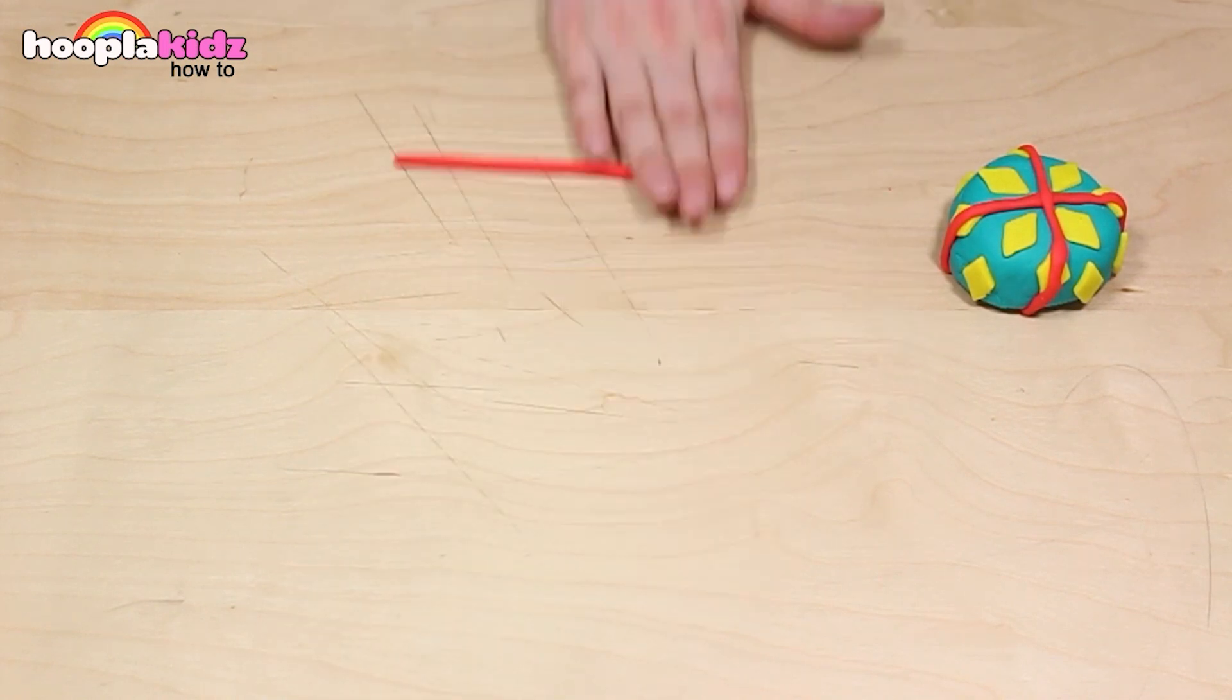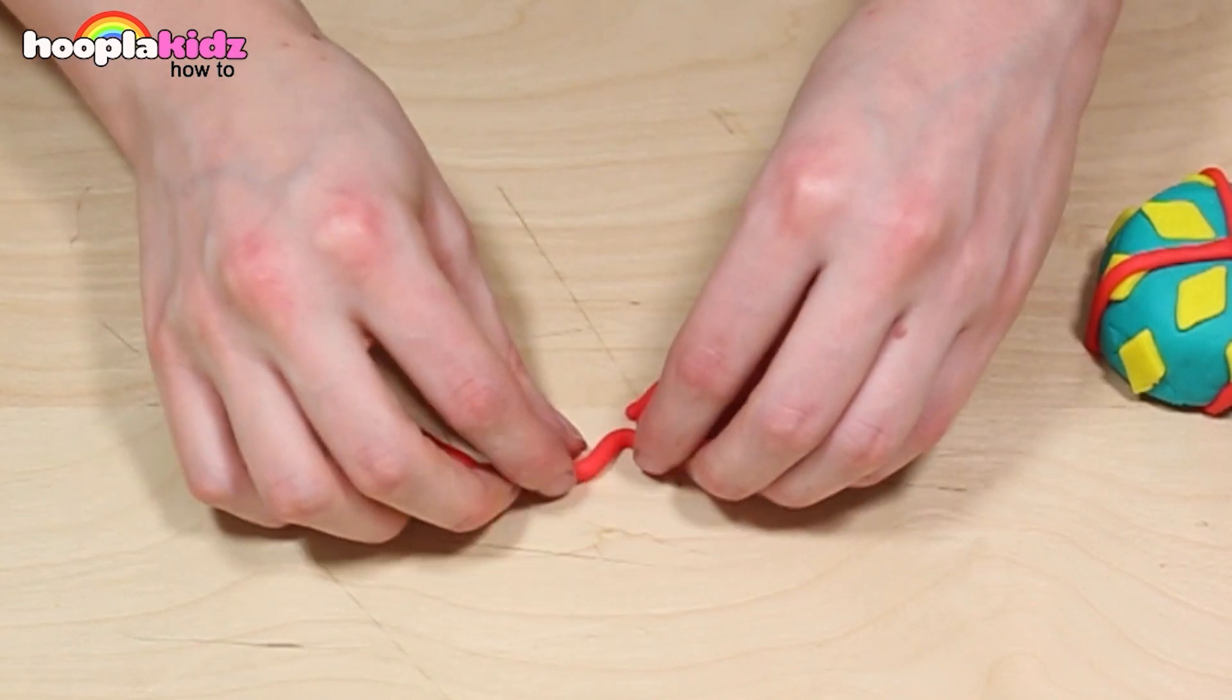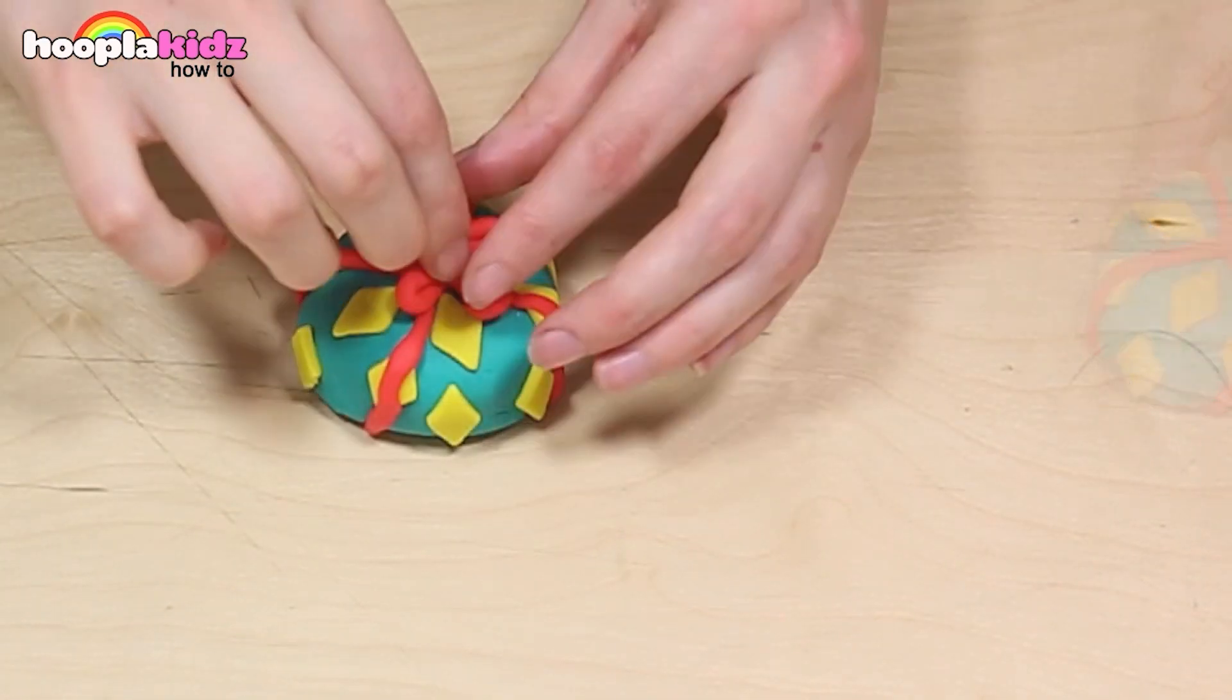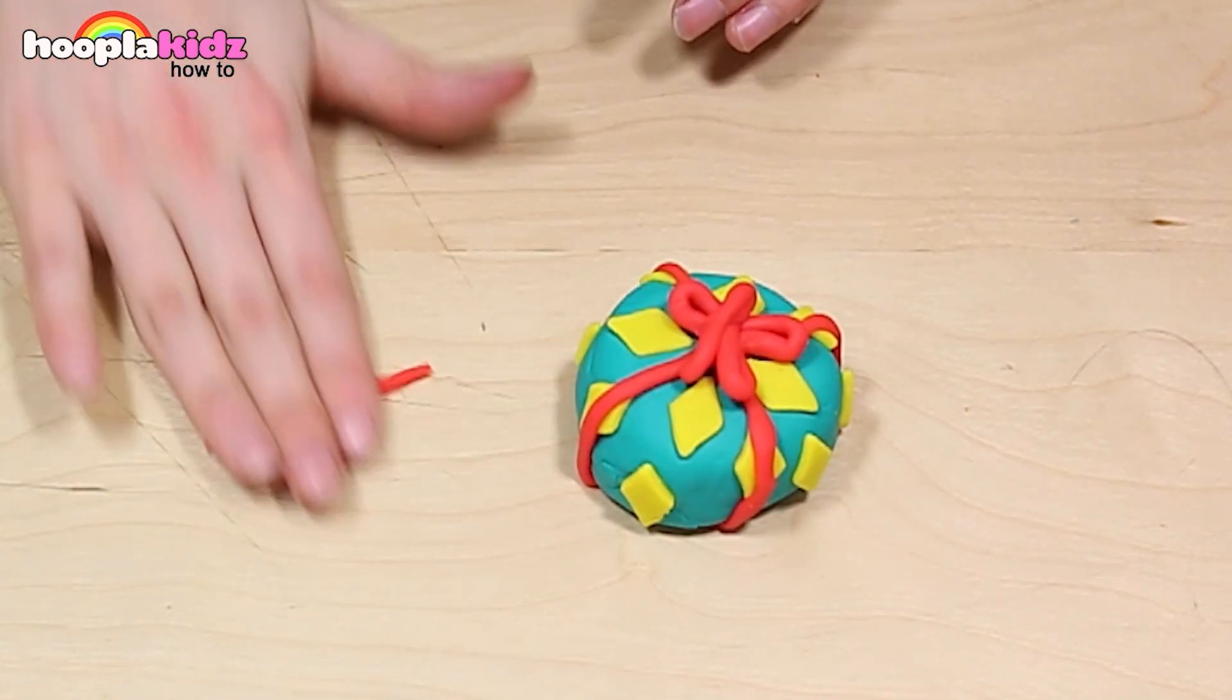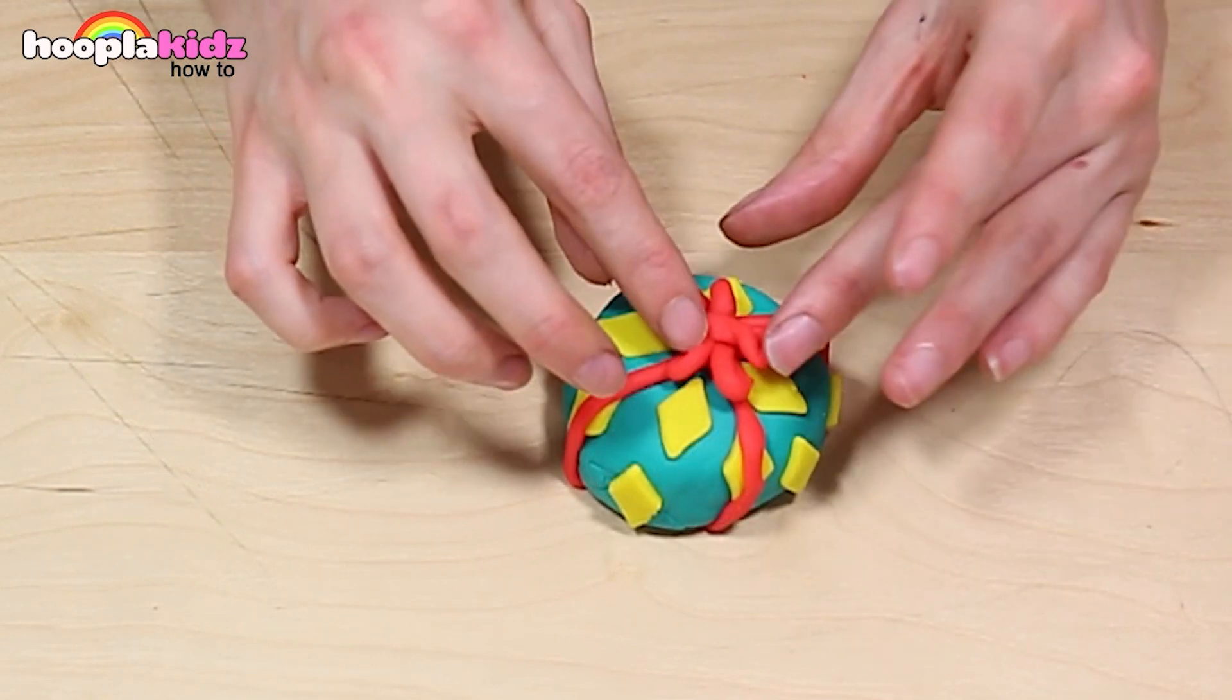We can't forget the bow. Add it on top and add a bit more Play-Doh so that there's a double loop. Perfect!